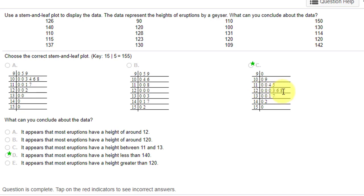one, two, three, four, five, six eruptions in the 120 stem. Twenty minus six is fourteen, that means there's fourteen in other places. Therefore, that's not the location of the most. It appears that most eruptions have a height between 11